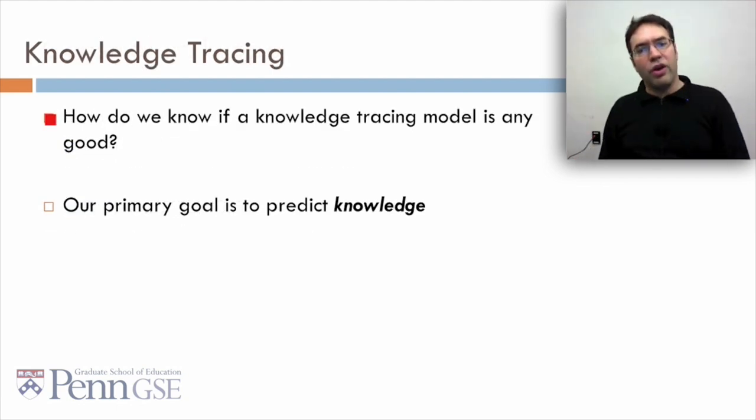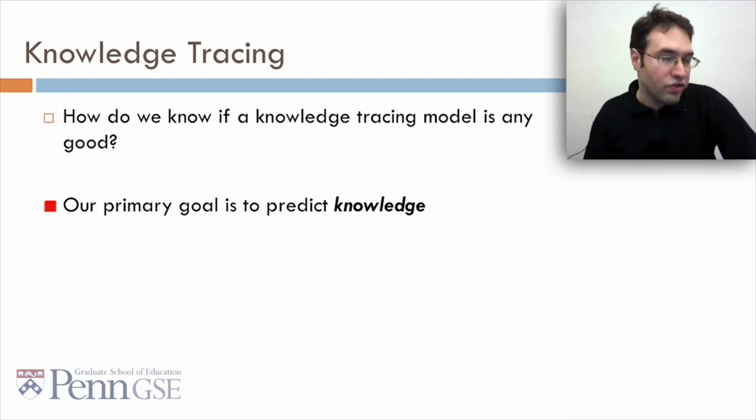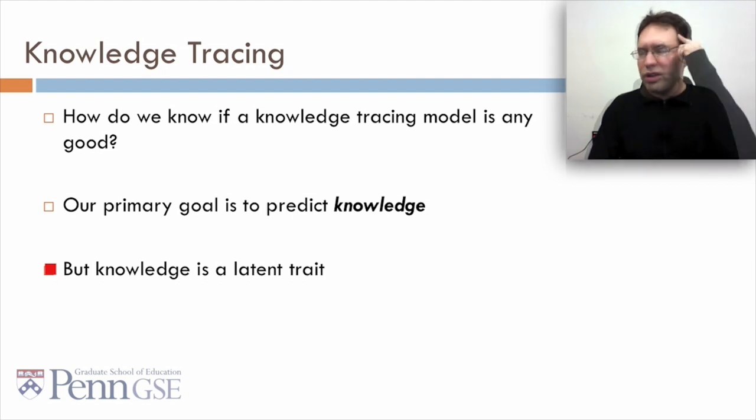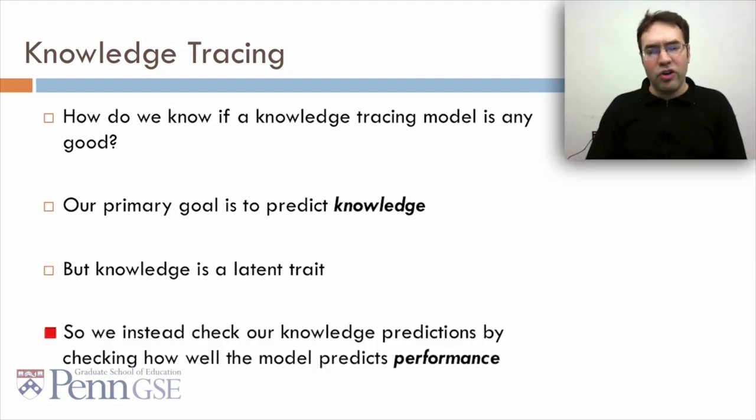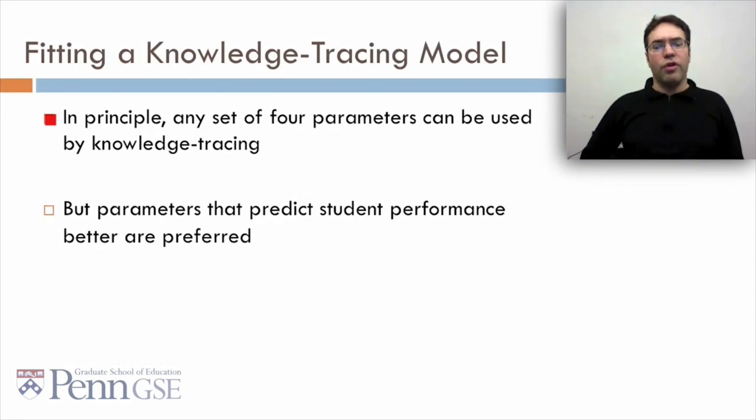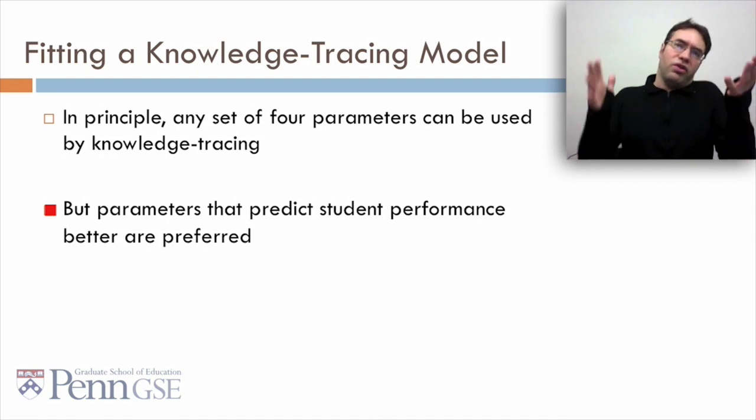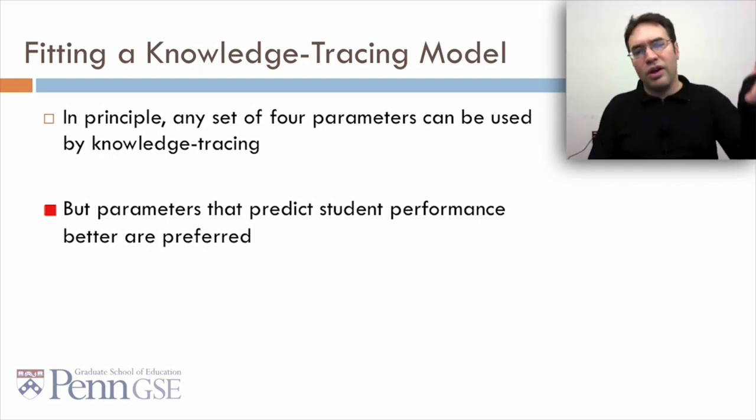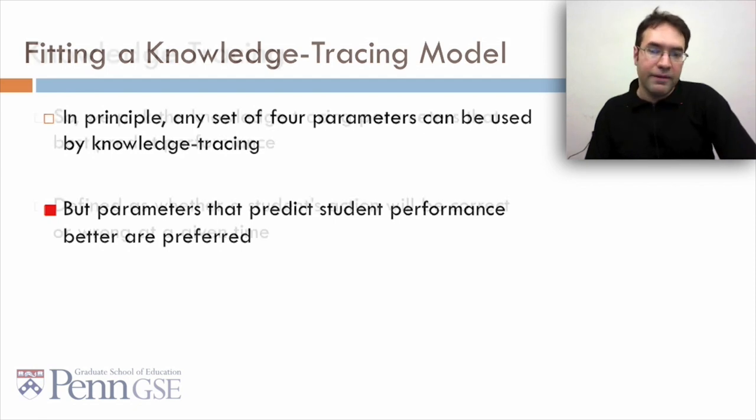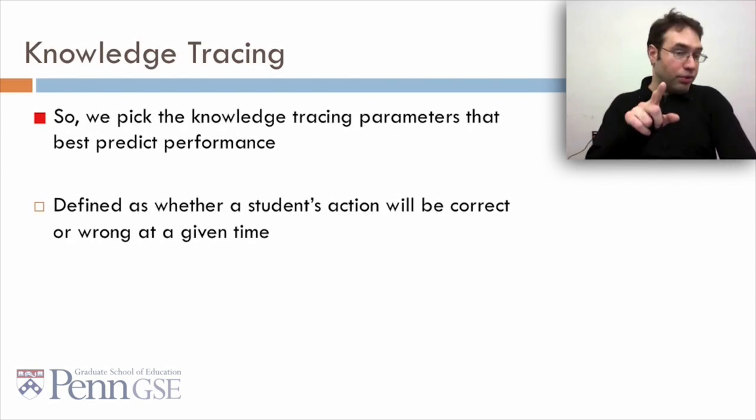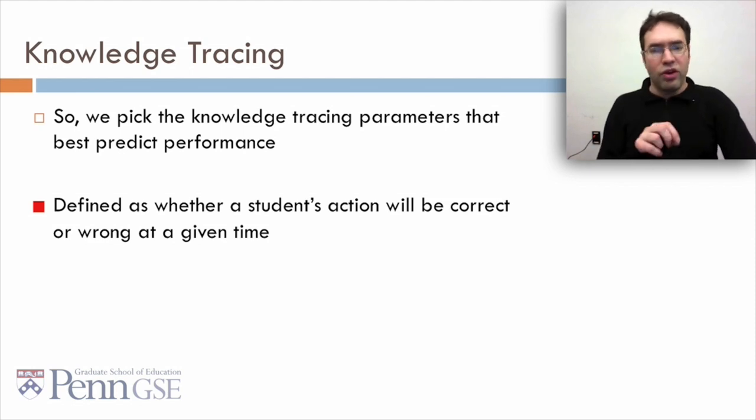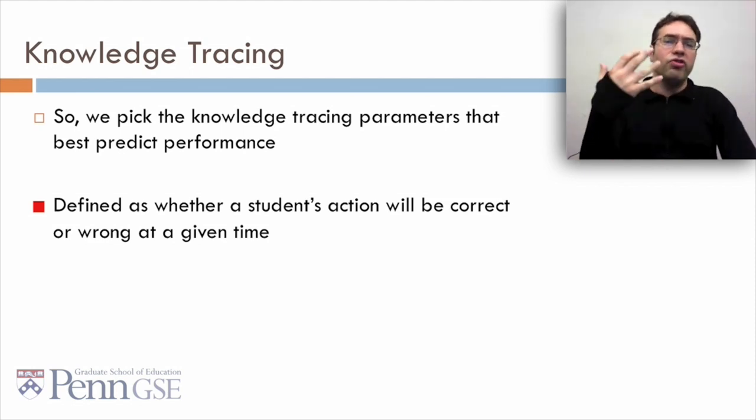So how do we know if a knowledge tracing model is any good beyond whether it is degenerate or not? Well, our primary goal is to predict knowledge. But knowledge is a latent trait, as we've talked about. So instead, we check our knowledge predictions by checking how well the model predicts performance. In principle, any set of four parameters can be used by knowledge tracing, but parameters that predict student performance better are preferred. Obviously, if you've got one set of parameters that you can run but it's terrible and one that actually fits pretty well, hopefully you prefer the one that fits well. So we picked the knowledge tracing parameters that best predict performance, defined as whether a student action is going to be correct or wrong at a given time when knowledge tracing predicts it will be.